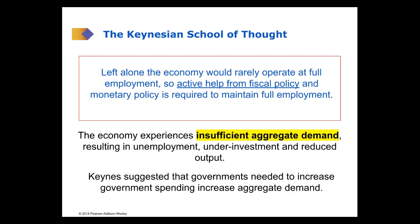The third broad category is the Keynesian school. The Keynesian idea was that markets and competitive processes generally worked, but if we left the economy alone, they would rarely operate at full employment. So there needed to be some active help from the government in terms of fiscal policy in order to maintain full employment. In Keynes's system, the problems arose because the economy could experience insufficient aggregate demand — there wouldn't be enough demand, and therefore you'd have unemployment, underinvestment, and reduced output. The only way for this to be corrected was for the government to increase spending as a way of increasing aggregate demand.